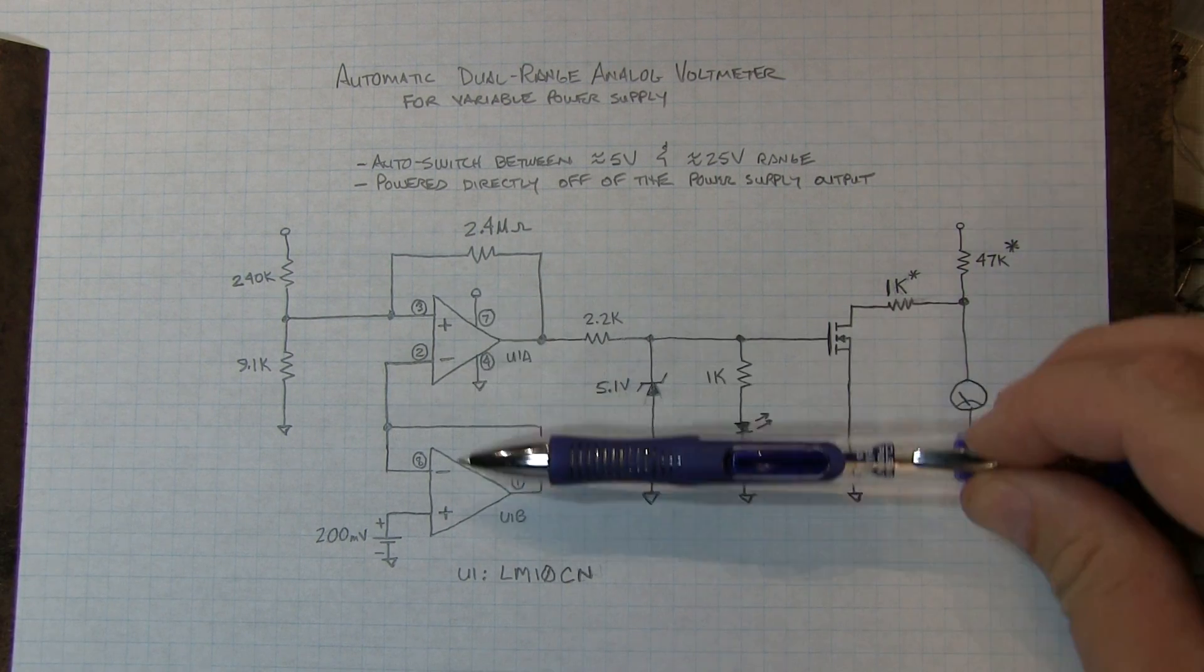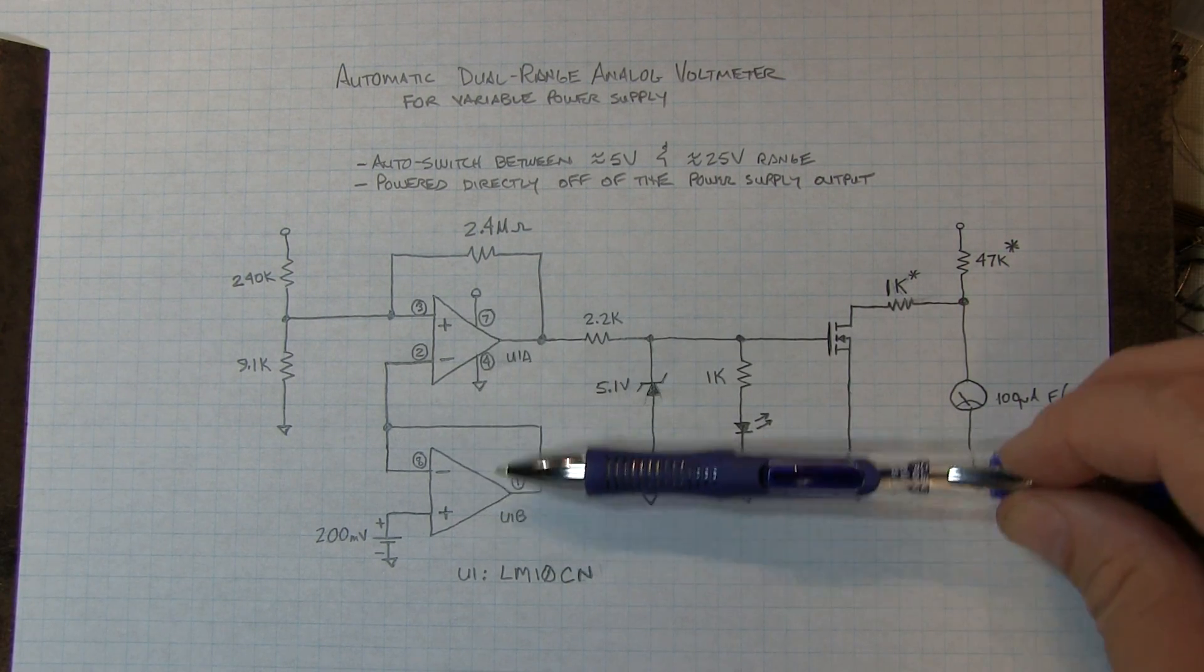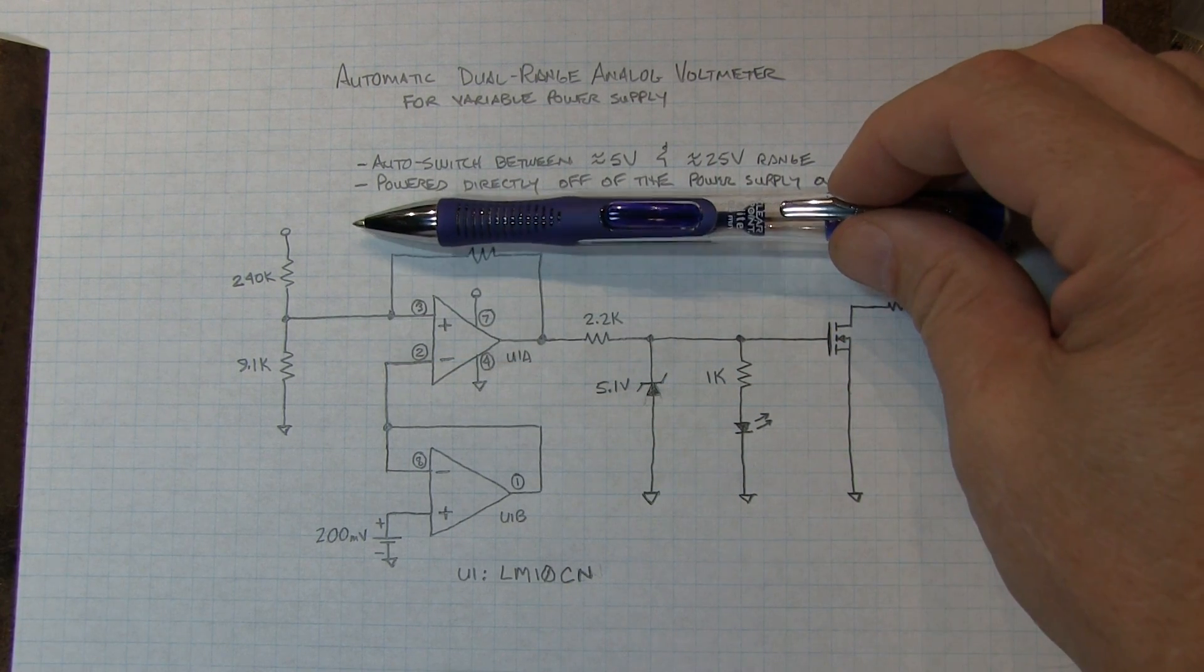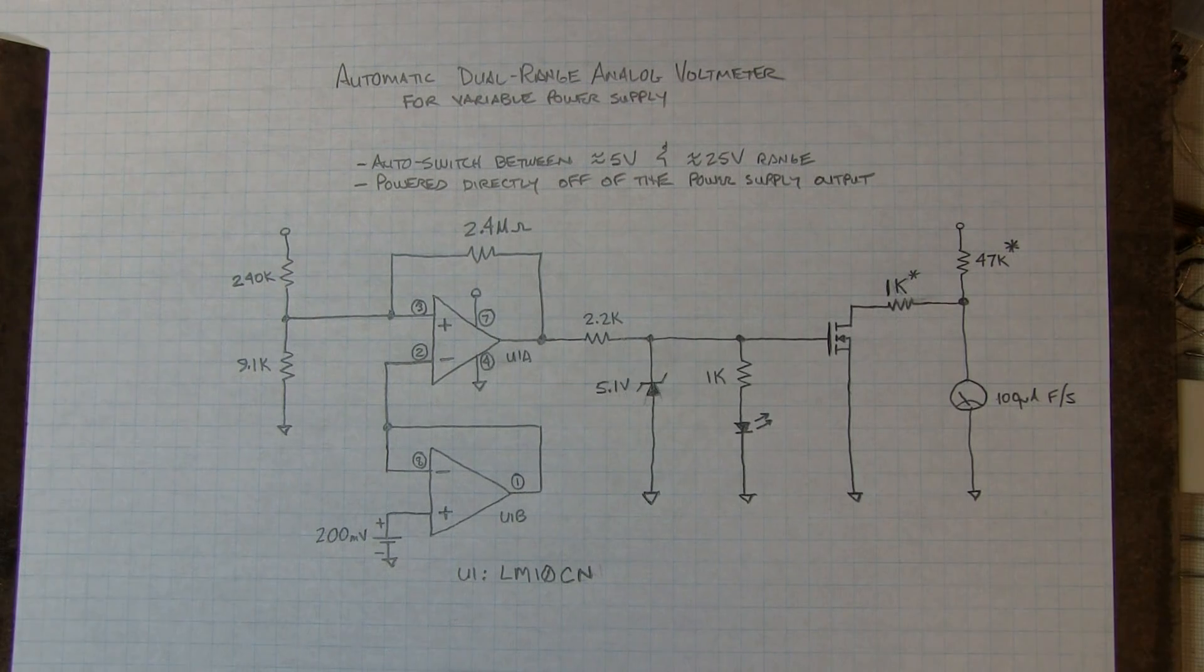So as we're turning the power supply up, the circuit will eventually power up. And when it does, it's going to be in the correct state until we go above five and a half volts and then it switches.